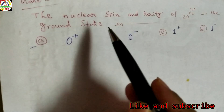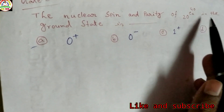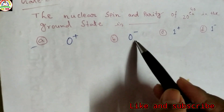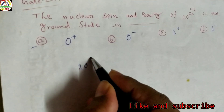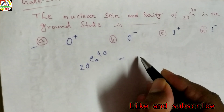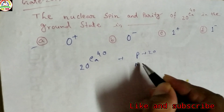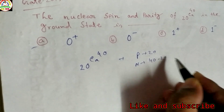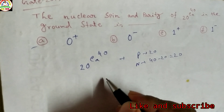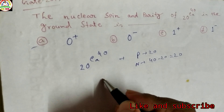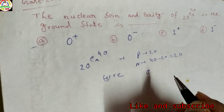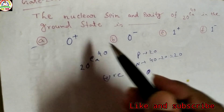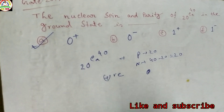First problem from GATE 2019: The nuclear spin and parity of 20Ca40 in the ground state. The options are 0+, 0-, 1+, or 1-. Here, proton number is 20 and neutron number is also 20, so it is an even-even nucleus. For even-even nuclei, there are no unpaired nucleons, thus parity is positive and angular momentum is 0. So the spin parity is 0+, meaning option A is correct.